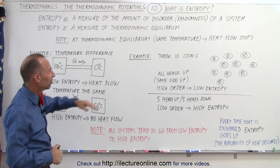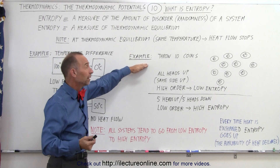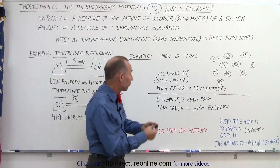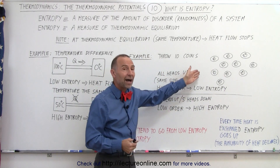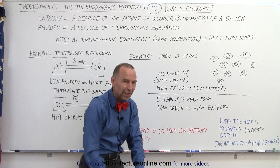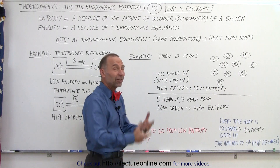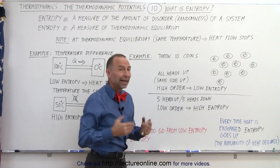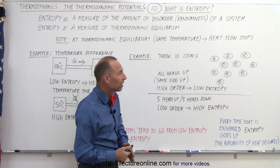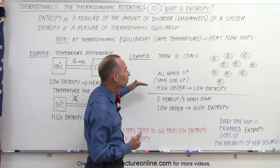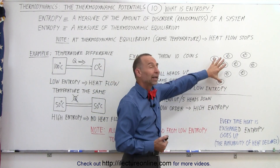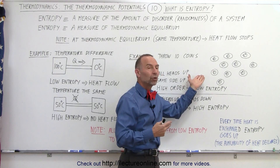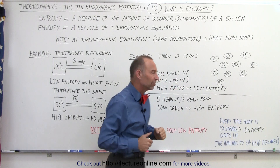A couple of examples. Let's say we throw 10 coins at random. The chance of them all ending up with the same side up — all heads up, for example — is very, very low, because that is a highly ordered state, therefore a low entropy state. When we toss 10 coins, the chances are that about 5 will be heads up and 5 will be heads down. So naturally, things tend to go from an ordered to a disordered state. This is a highly ordered state, and when we randomly toss coins around, they will tend to go to a low ordered state, therefore a high entropy state.